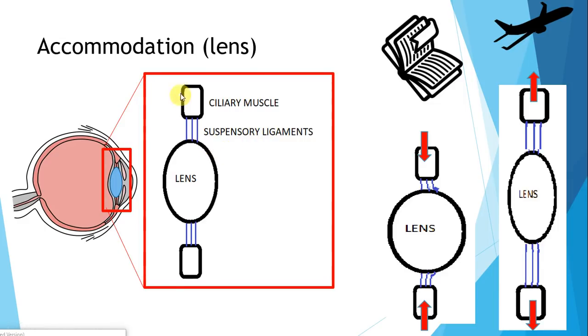When the ciliary muscle is relaxed, on each end it is pulling on the lens to make the lens thin. Take a look at this diagram here. This is what it would look like under the most relaxed state. The ciliary muscle is pulling on each end of the lens, therefore making the lens thin.